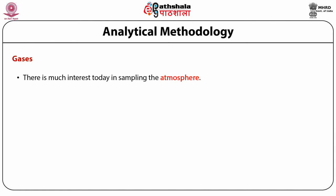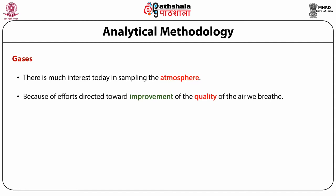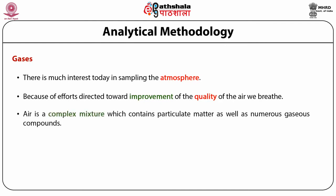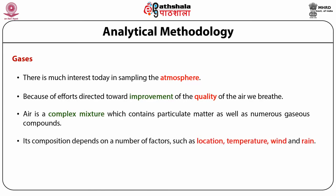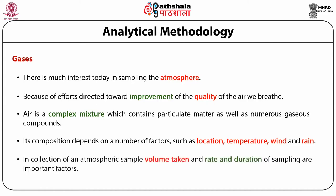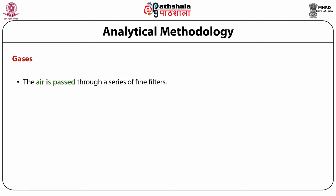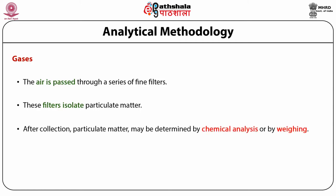There is much interest today in sampling the atmosphere due to efforts toward improving air quality. Air is a complex mixture containing particulate matter and numerous gaseous compounds; its composition depends on location, temperature, wind, and rain. In collecting an atmospheric sample, the volume taken and the rate and duration of sampling are important factors. Air is passed through fine filters to isolate particulate matter and through a column of solution where a chemical reaction traps the desired component. Collected particulate matter may be determined by chemical analysis or by weighing.